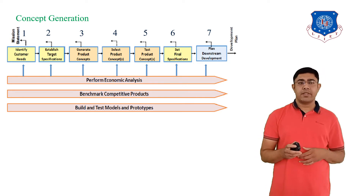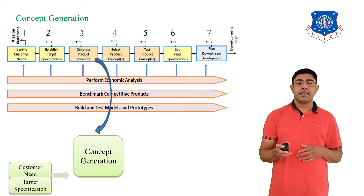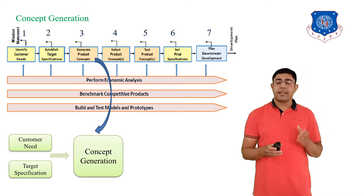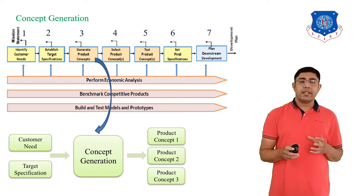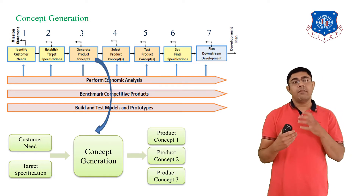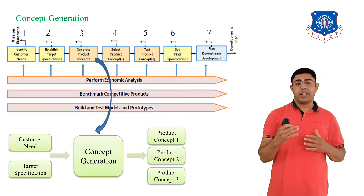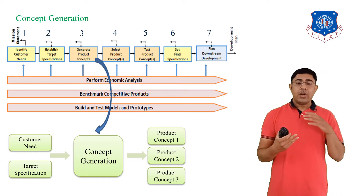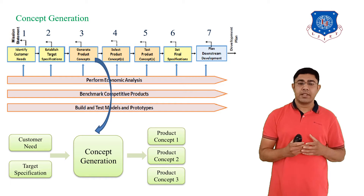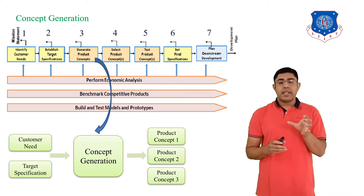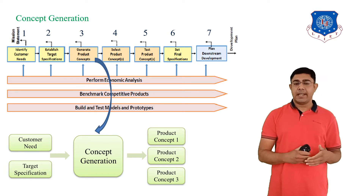Looking at concept generation, it takes the customer needs and target specifications as input. The output of concept generation is a number of concepts. Here I show only three concepts, but it is not necessary that there are only three — there may be 10 to 20 concepts as the output of concept generation.